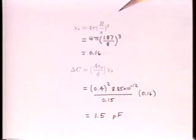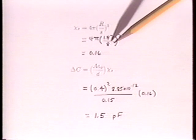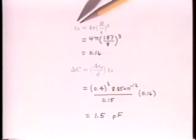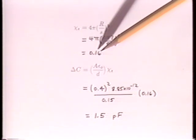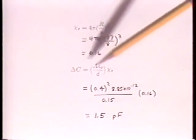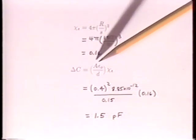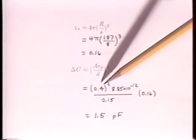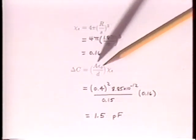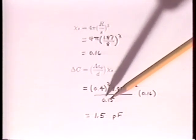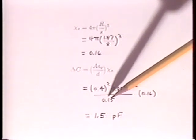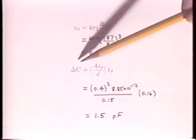The radius of the ping-pong balls is 1.87 centimeters. The spacing S is 8 centimeters. The electric susceptibility is then 0.16. This means that the relative permittivity is 1.16. To compute the resulting change in capacitance, we multiply the susceptibility we've computed by the electrode area, 0.4 meter squared, the permittivity of free space, and divide by the electrode spacing D, 15 centimeters. So the predicted change in capacitance is 1.5 picofarads.